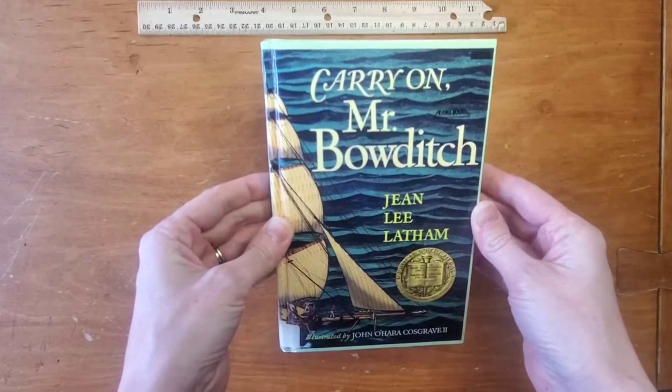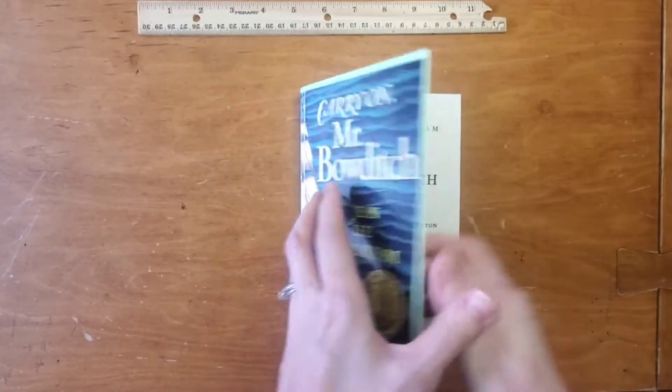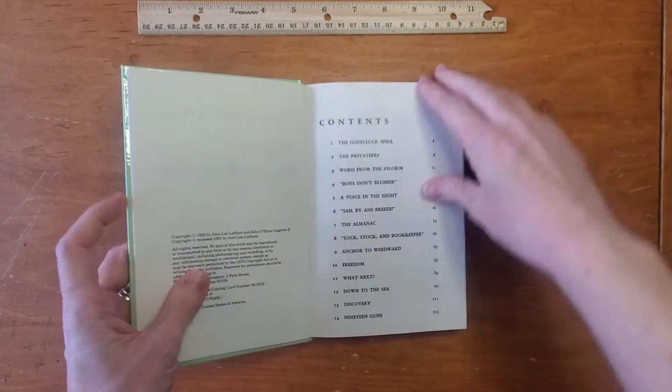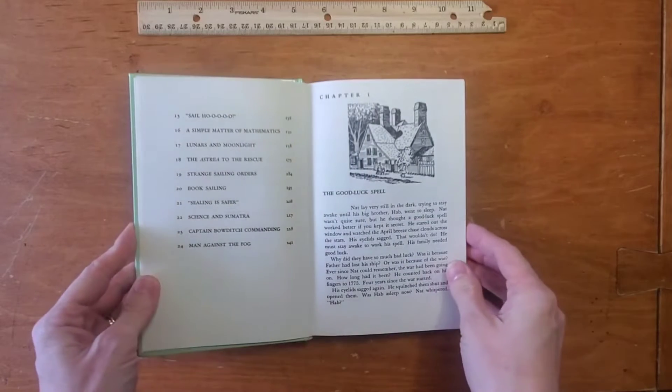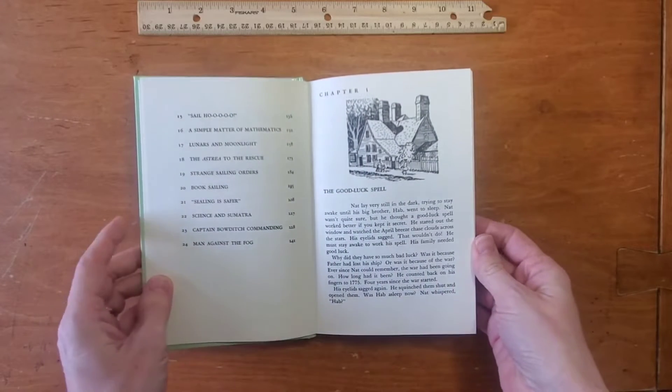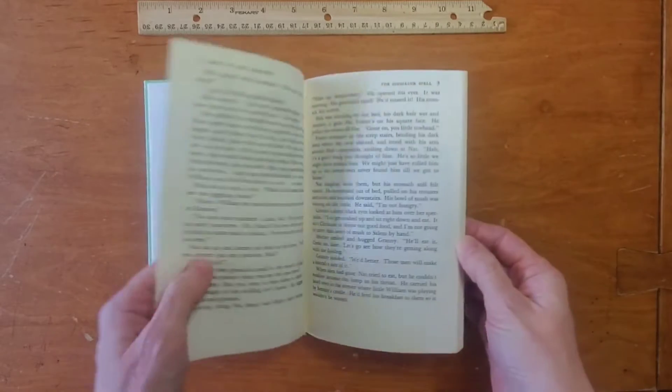Carry On, Mr. Bowditch, by Jean Lee Latham. This book is based on the life of Nathaniel Bowditch, who lived in Massachusetts from 1773 to 1838.